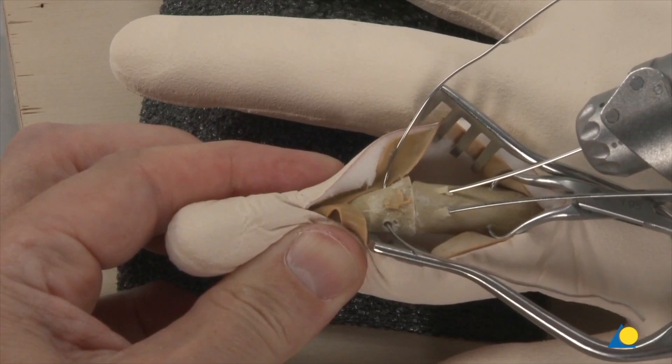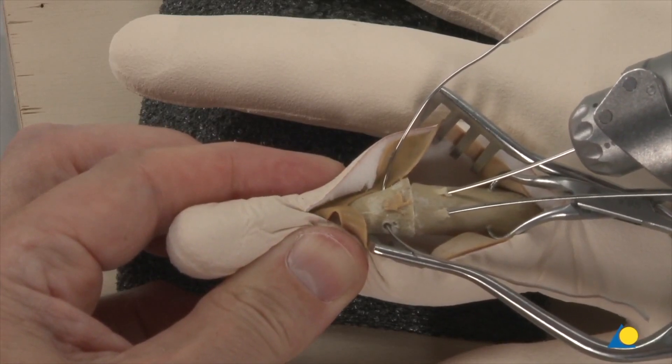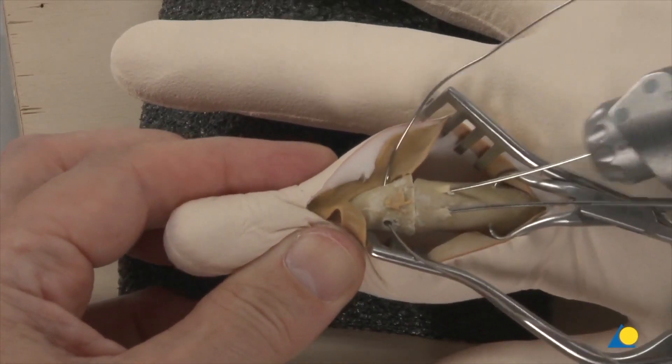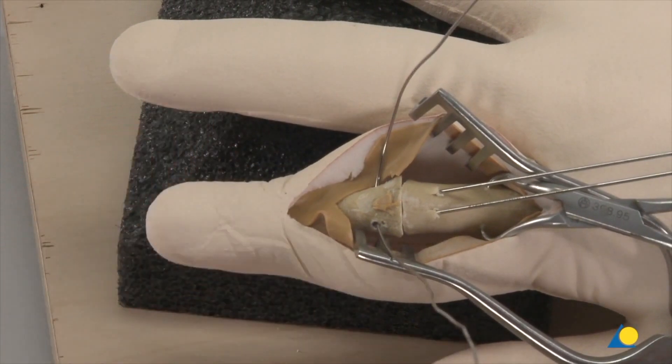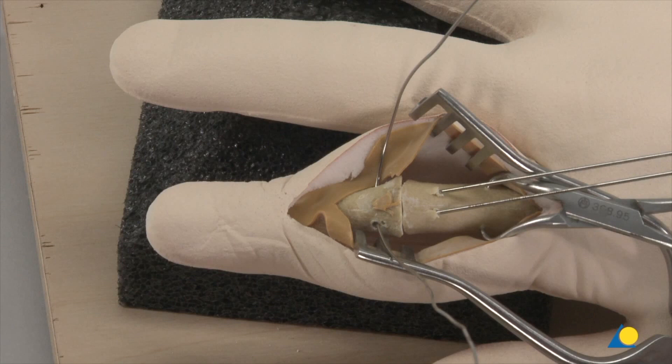Starting about 1 centimeter proximal to the osteotomy, two 1.0 millimeter K-wires are inserted parallel from the dorsal cortex of the proximal phalanx into the palmar cortex of the middle phalanx. The sharp trocar tips should not interfere with flexor tendon gliding, so it is important to check the correct position under fluoroscopy and eventually pull back the K-wires slightly.